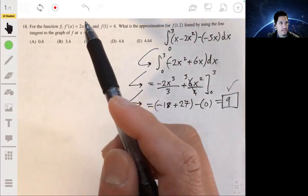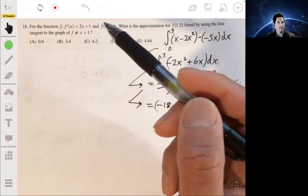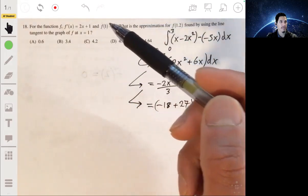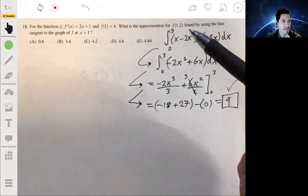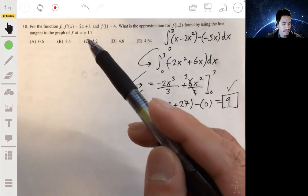All right, number 18. We have the function f and its derivative f prime to be 2x plus 1, and f of 1 is 4. We have to find the approximation for f of 1.2 using the line tangent to the graph of f at x equals 1.